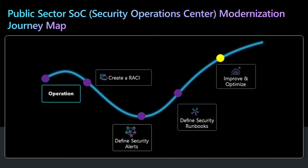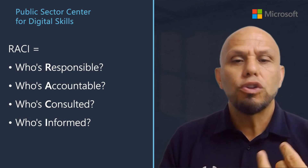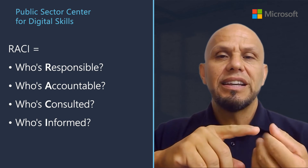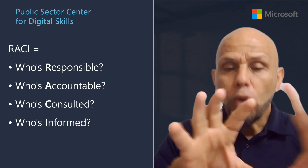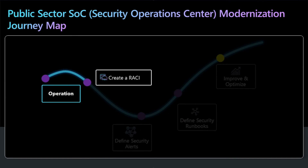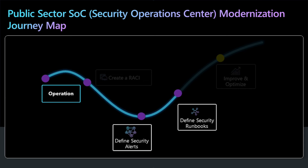There are a couple of key actions you need to take during the operationalization phase to ensure smooth operations. First is the creation of a RACI — defining who's responsible, accountable, consulted, and informed in terms of roles and responsibilities. Then you need to document and update your security runbooks to reflect the new tools and technologies, defining what series of tasks and workflows need to be executed, by whom, and using what tools to address a particular incident that comes into the SOC.